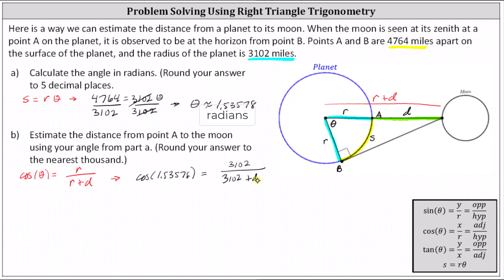Now to begin to solve for D, let's write the left side as a fraction with a denominator of 1, and now let's cross multiply. This gives us 3,102 plus D times cosine of 1.53578 equals 3,102. Next we'll divide both sides by cosine of 1.53578 radians.